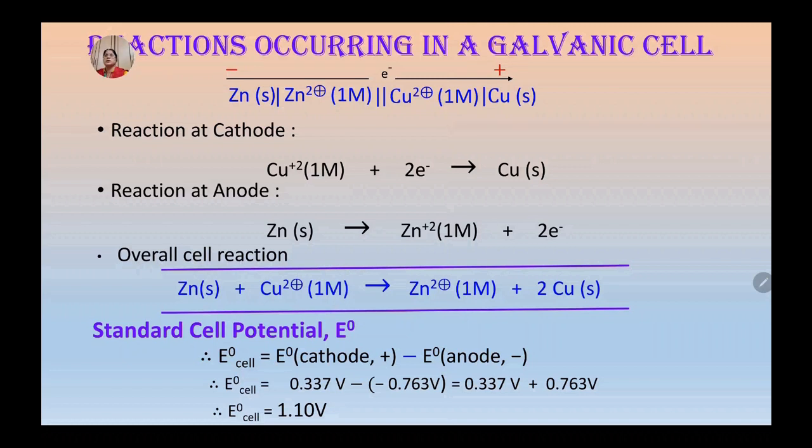Under standard conditions, E0 cell for galvanic cell is equal to 1.10 volt.